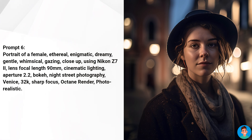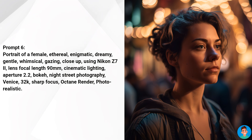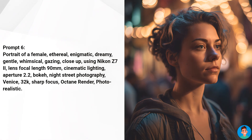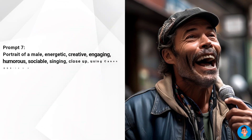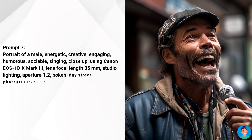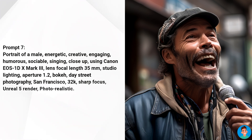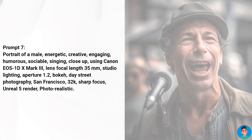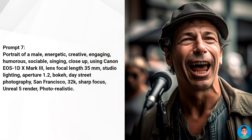Look at the details of both images generated by prompt 6. If you find the bokeh too strong or dreamy, you can always play around and reduce the depth of field. For prompt 7, I had to make a variation of the second image because the details were not up to my mark. The variations worked. Remember: when you see an image, check it for mistakes and try variations. Sometimes variations give better results, and sometimes you must regenerate the whole prompt or write a new one.